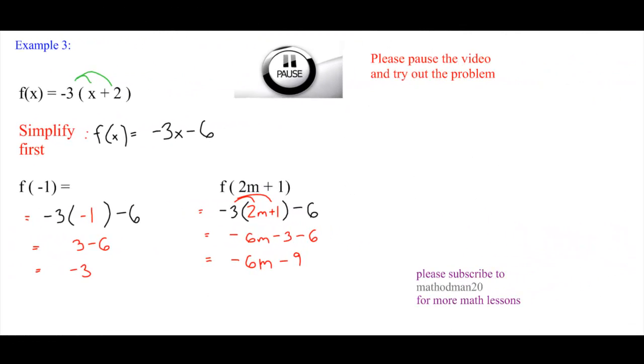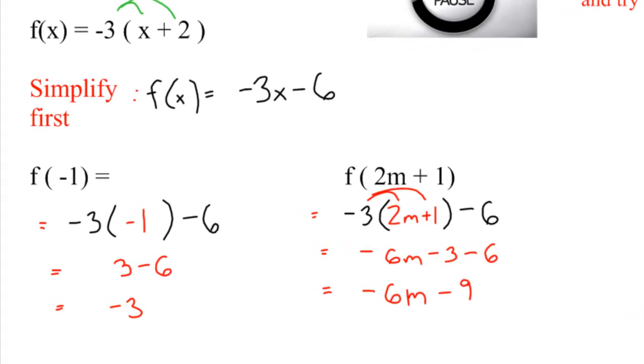Here are the answers for the two examples below. First thing I did was simplify my function by distributing. Negative 3 times x plus 2 is the same as negative 3x minus 6. For the first example, f of negative 1, all you had to do was replace the x with a negative 1. That simplifies to negative 3 at the end.